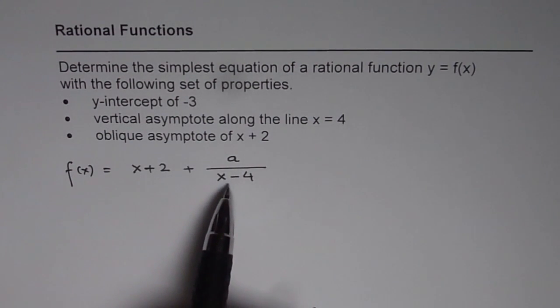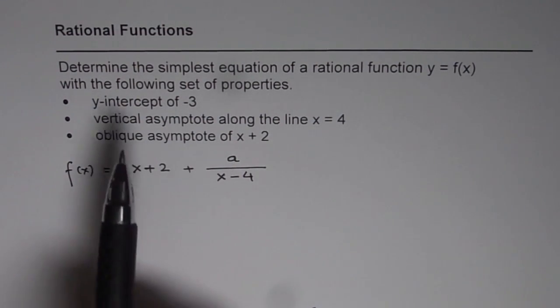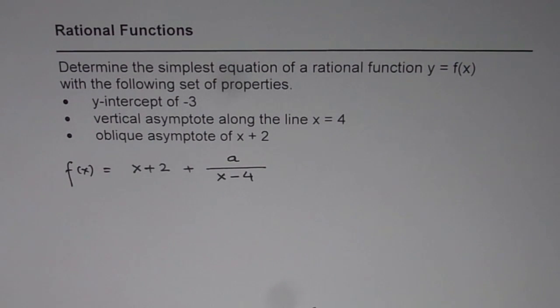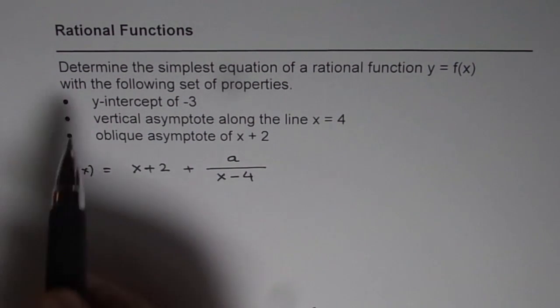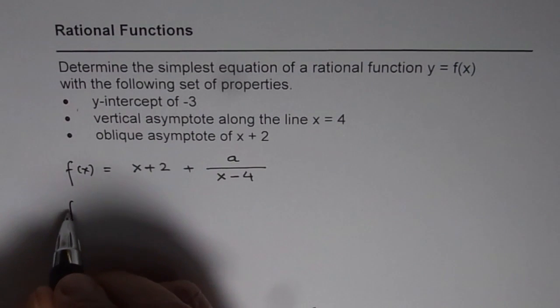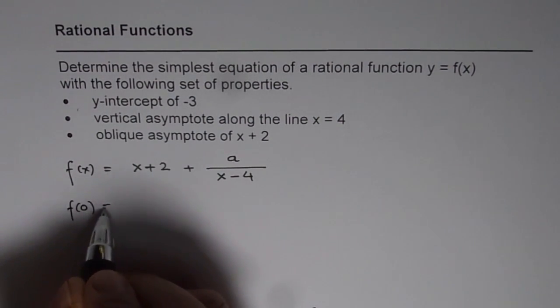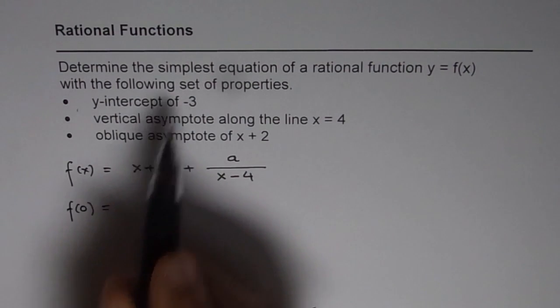Now we have to find the value of a so that the y-intercept is -3. That is the concept. So y-intercept is the value of the function at x = 0, that means f(0) should be -3.